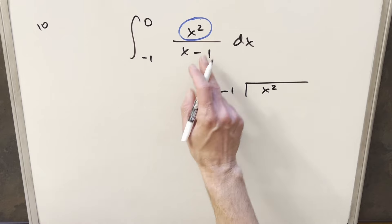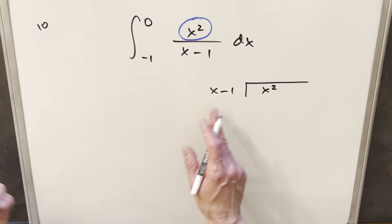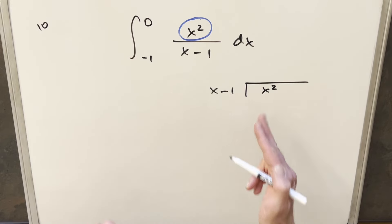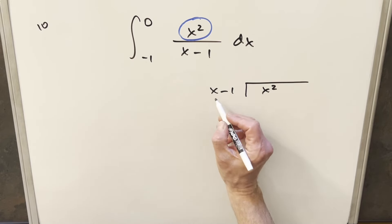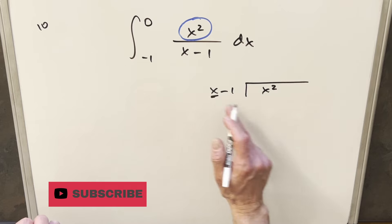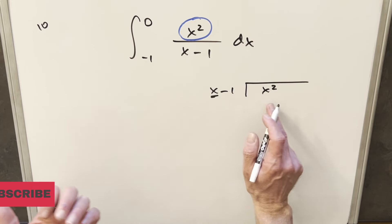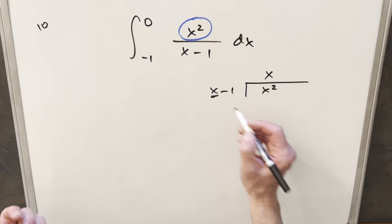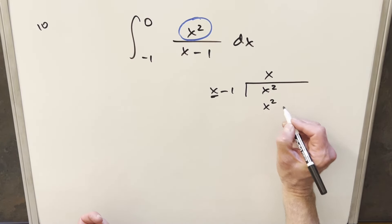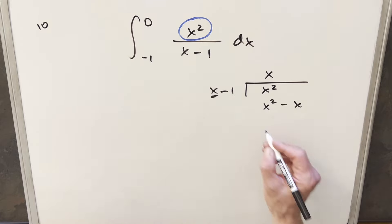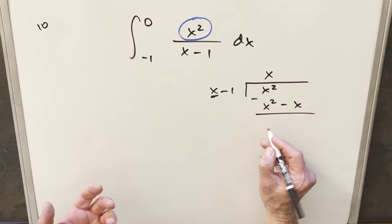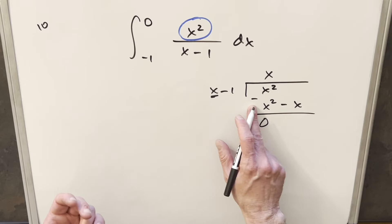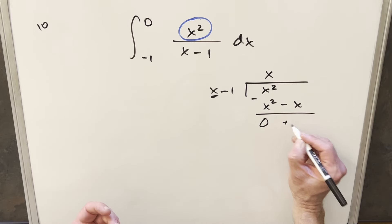What we're going to do is divide the denominator into the numerator, just like numeric long division — same principle. Looking at the highest degree term, what do I need to multiply x by to get x squared? I multiply by x, then multiply x times x minus 1 to get x squared minus x. Subtracting, the x squareds cancel, giving 0, and minus minus x gives us plus x.